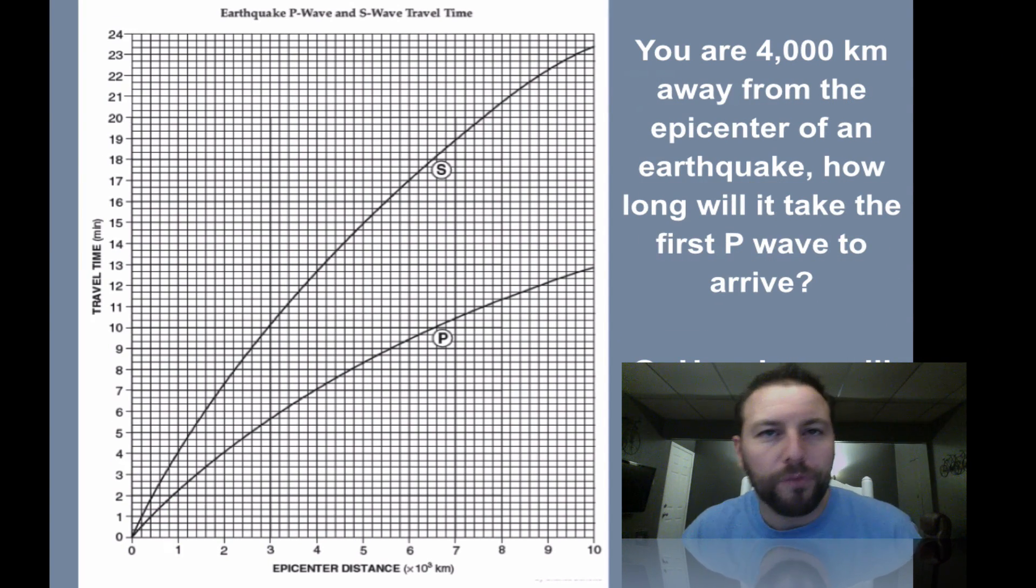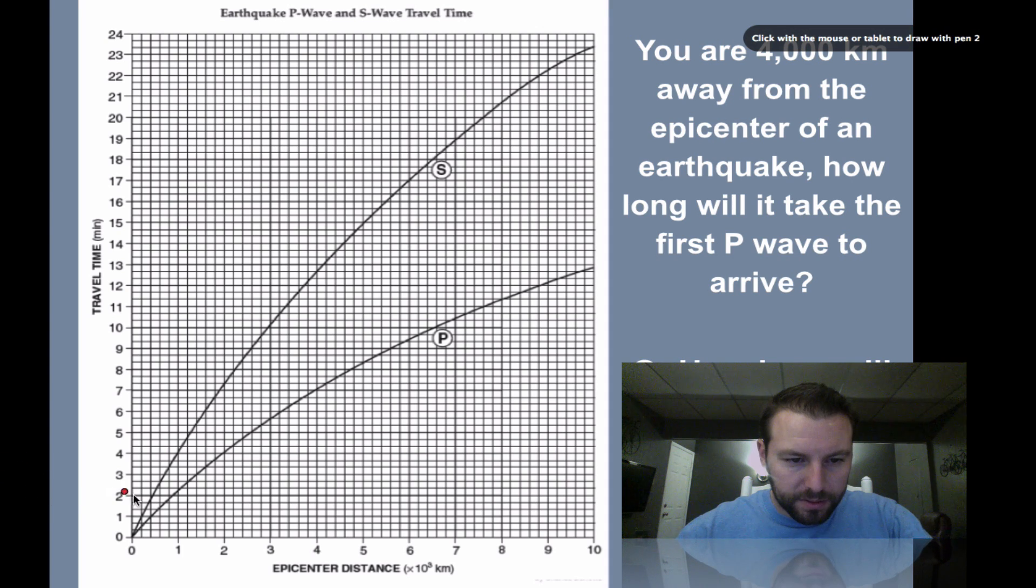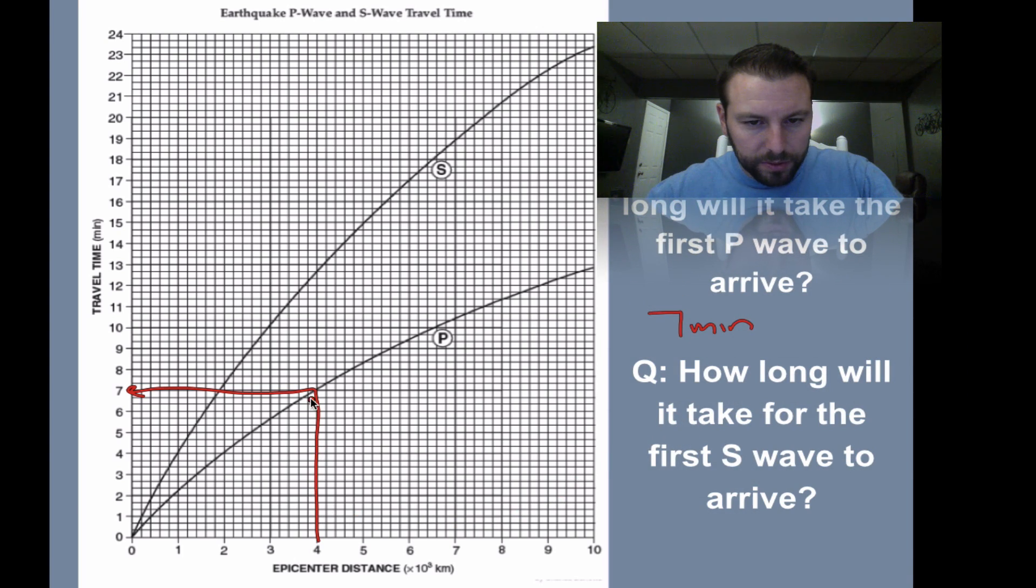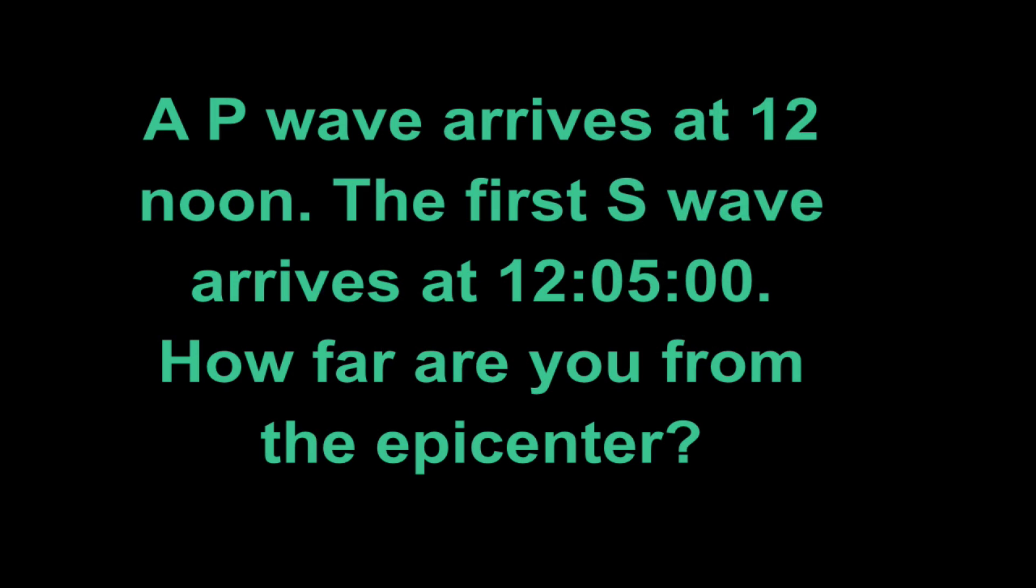We can go a little bit further. We're 4,000 kilometers away from the epicenter of an earthquake. How long will it take for the first P wave and then for the S wave? So 4,000, up to where it hits the line, over, so 7 minutes. How long will it take for the first S wave? So we do the same thing, up to where it hits, over, 12 minutes 40 seconds. Pretty standard stuff. Easy so far.